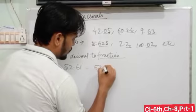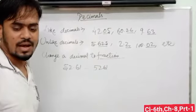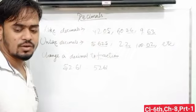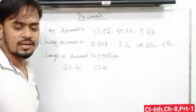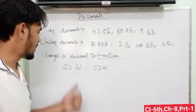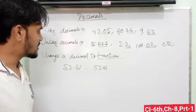5, 2, 6, 1. And after that, write 1 followed by as many zeros as the number of digits in the decimal part as the denominator. That means after the decimal point, there are two digits after the decimal.